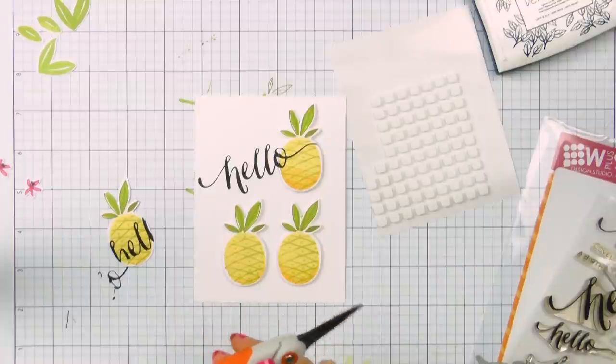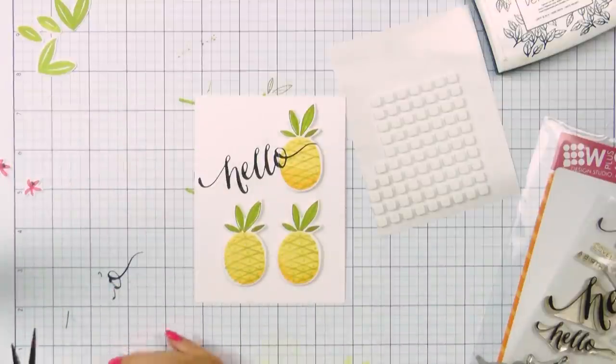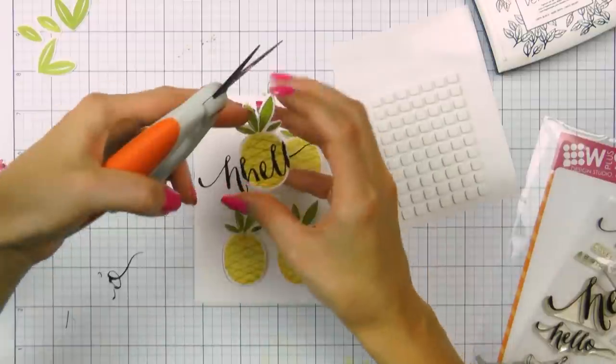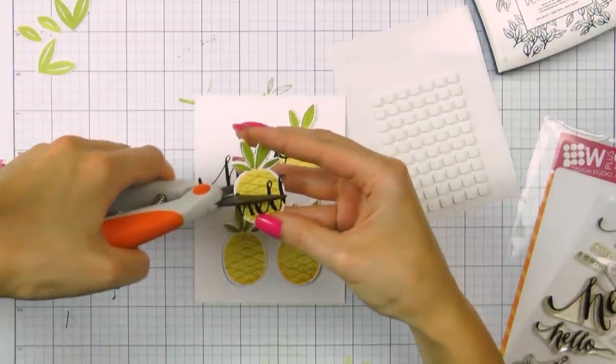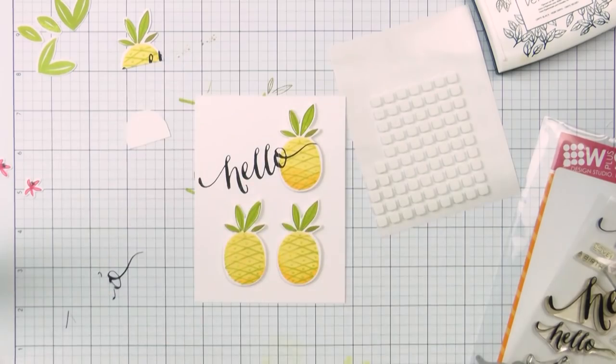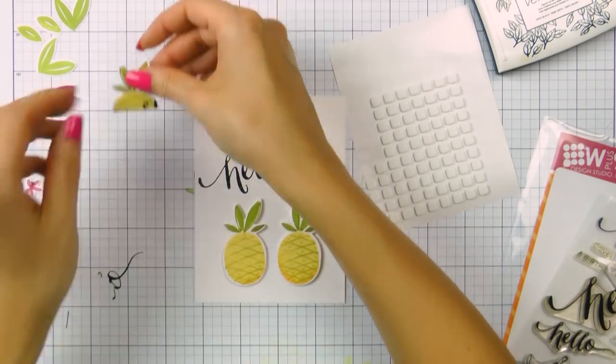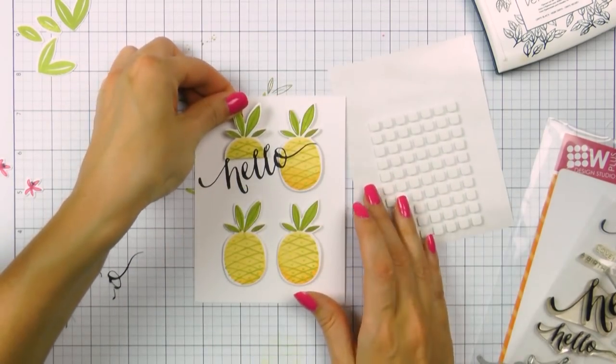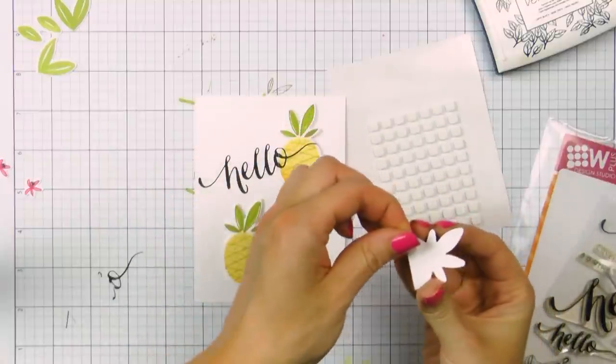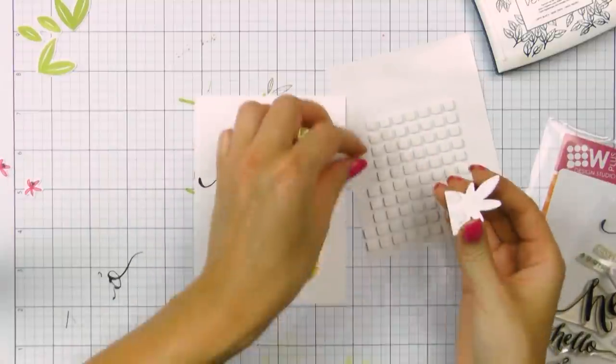I cut the pineapple, the last fourth pineapple in half. So I cut the bottom part off and I just foam mounted the top part of the pineapple. When I originally made this card, I actually did that because I messed up the bottom part of the pineapple. So I made that more out of a necessity rather than just the design idea.